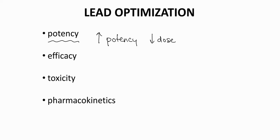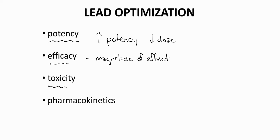Low dose drugs tend to be safer. A second property is efficacy, which is related to the magnitude of a drug's effect — the magnitude of how the drug affects the target protein. A third property is toxicity. Potential toxic interactions of a lead will be minimized, so the goal in lead optimization is to minimize toxicity.